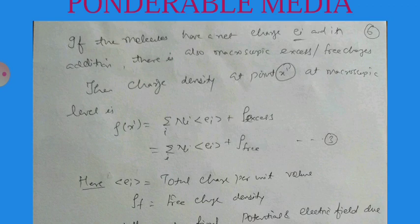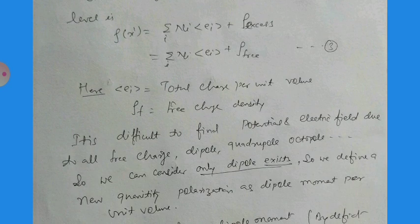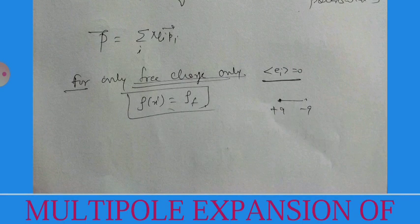The first term on the right-hand side represents the total charge per unit volume and ρ_f is the free charge density. It is difficult to define the potential and electric field due to all types of charge distributions — free charges, dipoles, quadrupoles, octupoles and so on. So we consider only dipoles since they play the maximum role. We define polarization P as dipole moment per unit volume: P = p/V. For free charges only, eᵢ = 0, so there are no dipoles, giving ρ(x) = ρ_f.